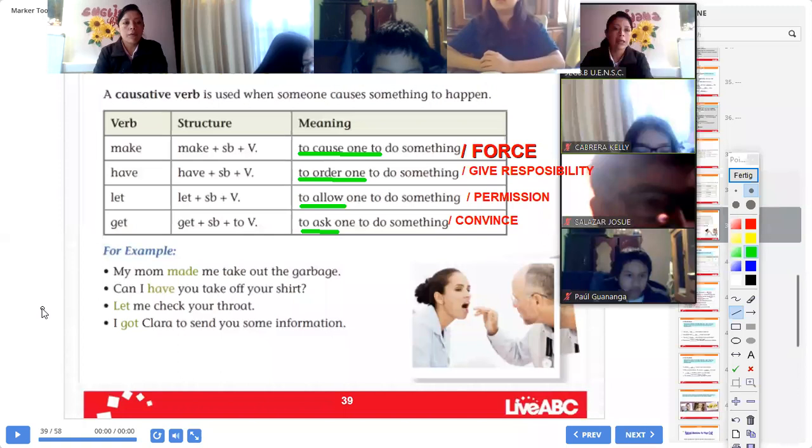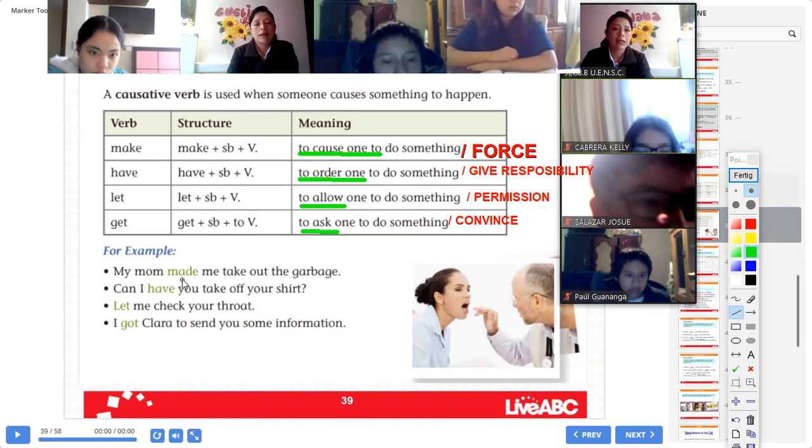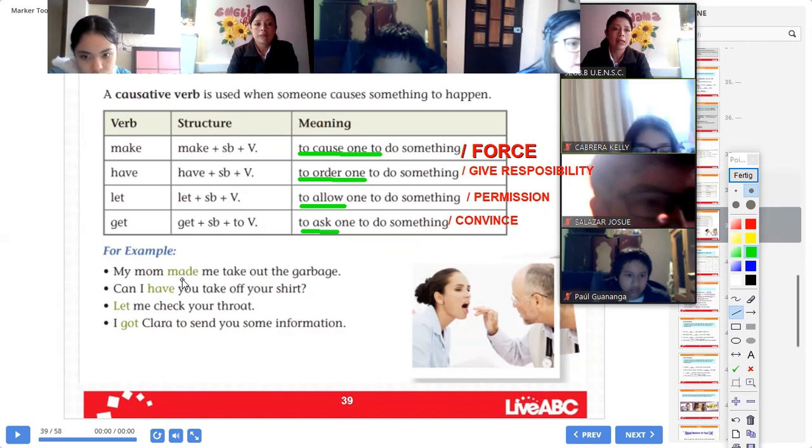Miss Apollo, read the example. My mom made me take out the garbage. Okay, remember, the verb is in present, in past, or past participle. En cualquier tiempo puede estar este verbo. What is the meaning? Remember, make is force, o hacer que alguien haga algo. Miss Yambay, what is the meaning, my mom made me take out the garbage? Mamá me obligó, o me forzó a sacar la basura. Okay, mamá hizo que yo sacara la basura. Remember, this is in past. Hizo que sacara la basura.